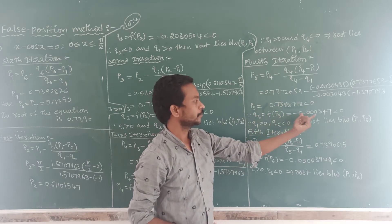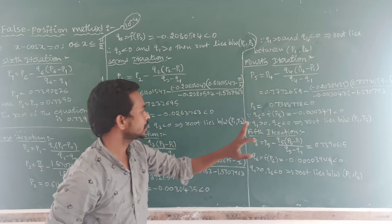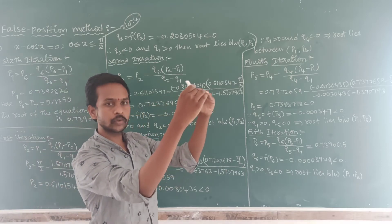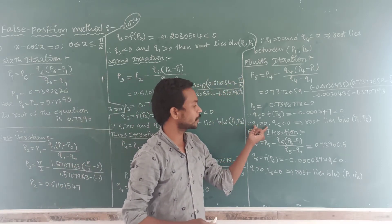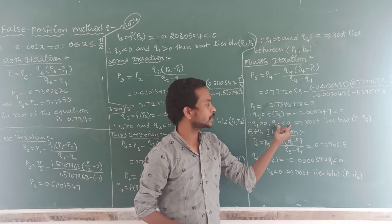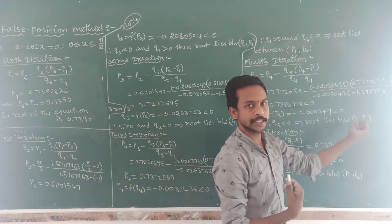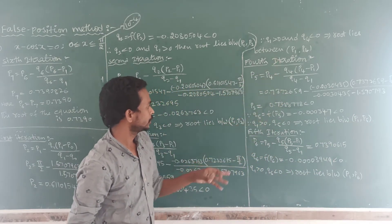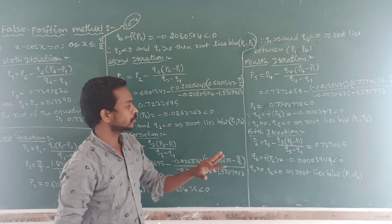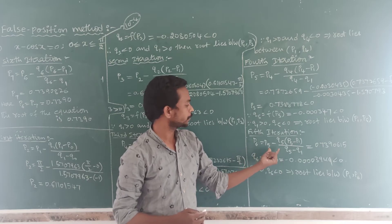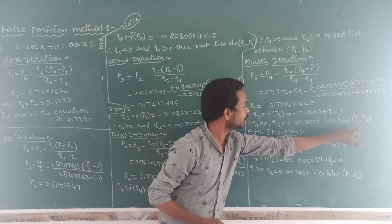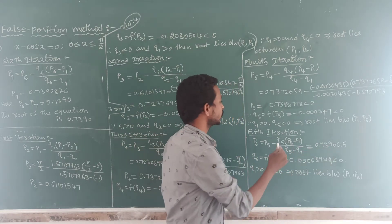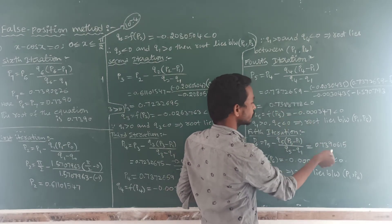We find Q5 = f(P5), which is also less than zero. Checking the signs: Q5 less than zero and Q1 greater than zero — they have opposite signs. Therefore the root lies between P1 and P5. We still have not got the same value for P4 and P5, so we do the next iteration: P6 = P5 − Q5 × (P5 − P1) / (Q5 − Q1). Substituting all values, we get P6. Comparing P5 and P6, we did not get the same.